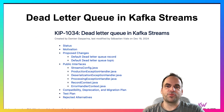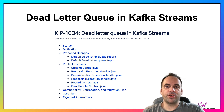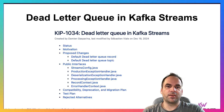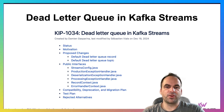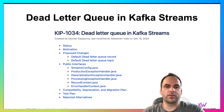In Kafka Streams, the open source stream processing library in Java which is part of Apache Kafka, there is also work going on in the KIP — the Kafka Improvement Proposal — to add out-of-the-box dead letter queue support into Kafka Streams. This is ongoing work right now and will hopefully be part of the framework soon.